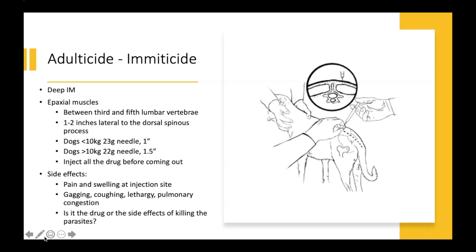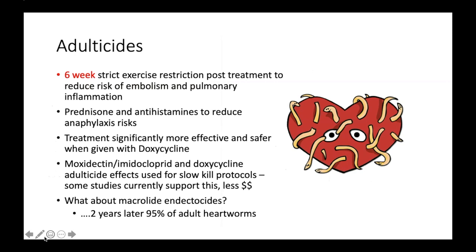Side effects include pain and swelling at the injection site — the most common — as well as gagging, coughing, lethargy, and pulmonary congestion. It stings like an absolute son of a gun and is very irritating to tissues. The reason they recommend injecting all the drug before removing the needle is so you don't track that painful, irritating product throughout the epaxial muscles. There's ongoing debate as to whether the gagging, coughing, lethargy, and pulmonary congestion are caused by the drug itself or are simply side effects of killing off the parasites and causing localized congestion.